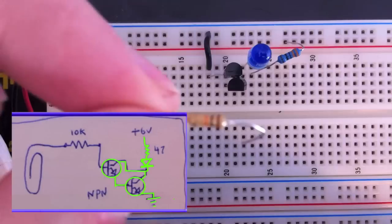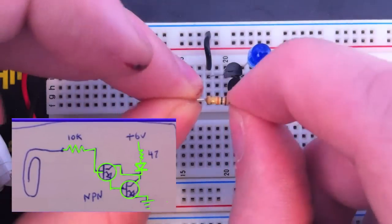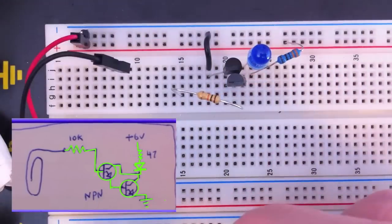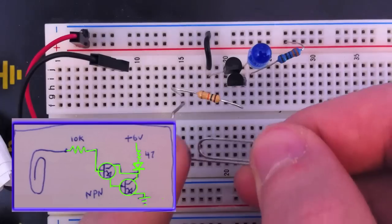Next, we'll connect the 10K resistor to the base of the first transistor, and then to that we will add our paper clip.